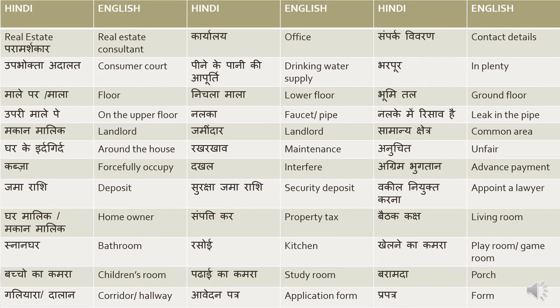Real estate paramashkar means real estate consultant — you can keep 'real estate' in English, that's not a problem. Real estate paramashkar or salakar means real estate consultant. Karyalay means office. Sampark vivaran means contact details. Usually the agent will say 'please leave your contact details with us, we will reach out to you' — aap apne sampark vivaran humare saath dein, hum aapko sampark kar lenge.